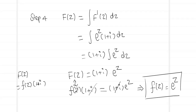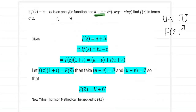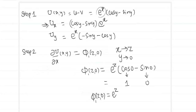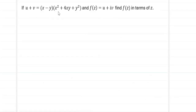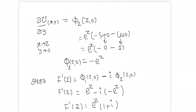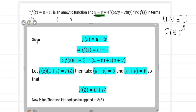This is how we proceed when given u + v or u - v. Now let's do one more problem of the u + v category. The problem: if u + v = (x - y)(x² + 4xy + y²) and f(z) = u + iv, find f(z) in terms of z. Notice we have not been given a single u or v, but a combination u + v.